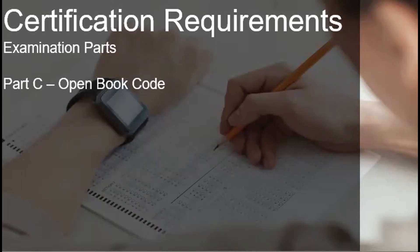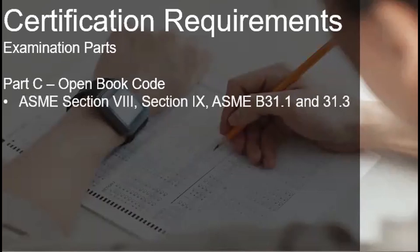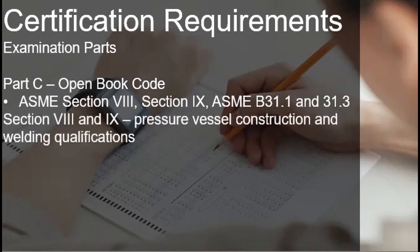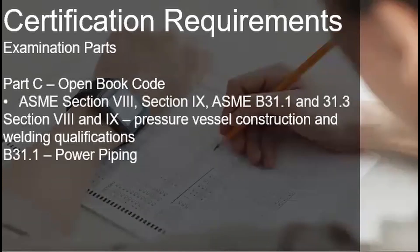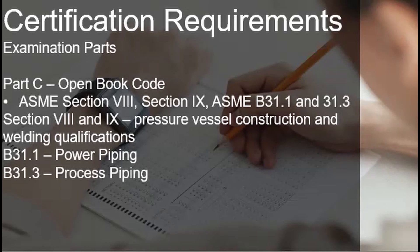The ASME codes sections 8, 9, B31.1, and B31.3 are packaged together, since their clauses are referenced with each other. These standards are commonly used in oil and gas applications, process plants, and power generating plants. Section 8 and 9 are for pressure vessel construction and welding qualifications respectively. B31.1 is for power piping and B31.3 is for process piping. Generally, choose the standard in which you practice in your workplace so that you are very familiar with the page locations of the tables and clauses. This part of the exam is tedious and time consuming, so it is essential that a candidate practice skimming through the books efficiently to avoid running out of time in the exam.